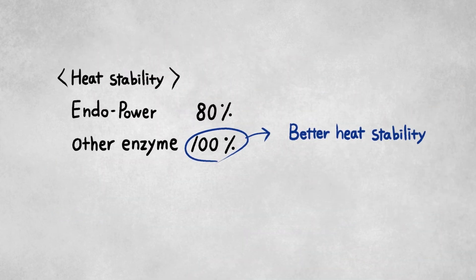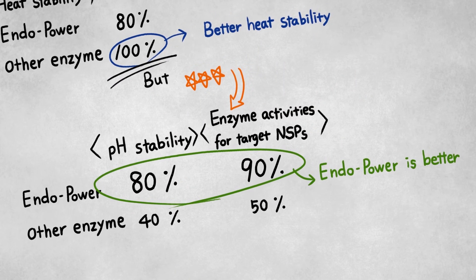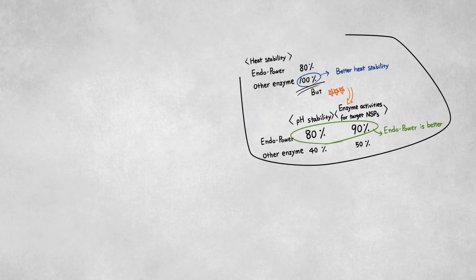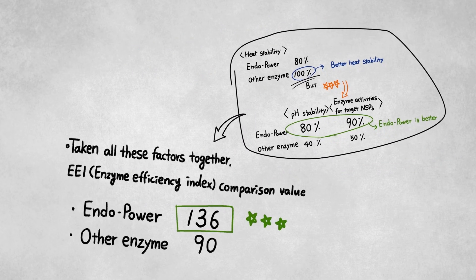It is very important to consider all three factors when you choose the most efficient enzyme. If one of three factors is not satisfied, the actual efficacy of enzyme would be lower than expected.